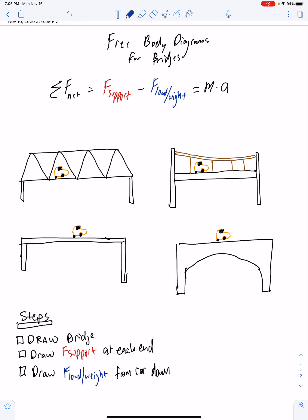So in terms of steps, first step, draw your bridge. We're going to assume that we've already done that because I have four examples. And then our second step, we're going to go ahead and draw the support forces at the ends of the bridge.